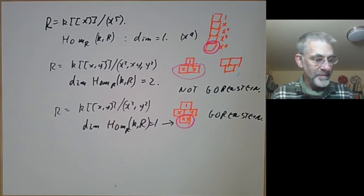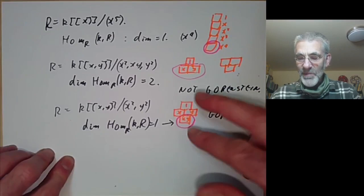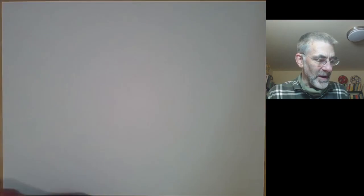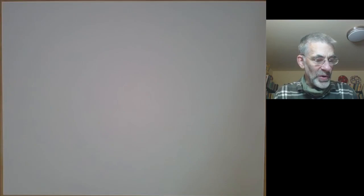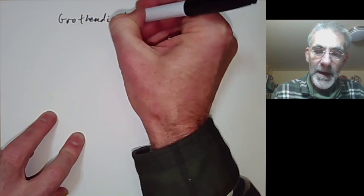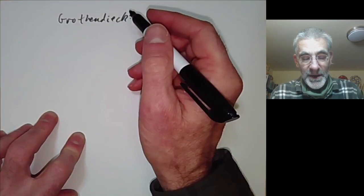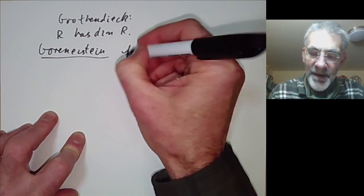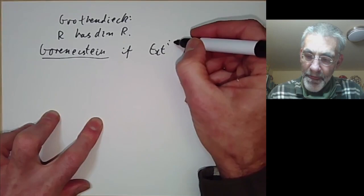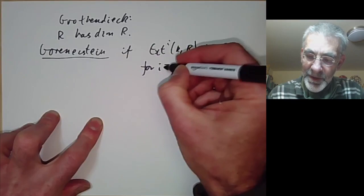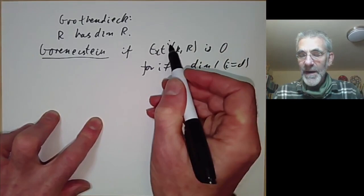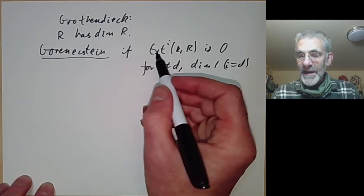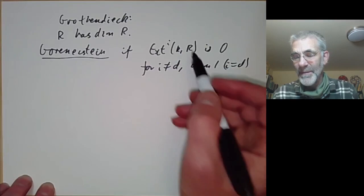For zero dimensions, the duality property of R is reasonably easy to understand. In higher dimensions, the definition is more complicated. Grothendieck defined Gorenstein rings: for local Noetherian rings, suppose R has dimension d. R is called Gorenstein if Ext to the i of K and R is zero for i not equal to d, and has dimension 1 for i equals d. For d equals zero, Ext to the zero is just Hom, so this says Hom from K to R is one-dimensional, which matches what we had before.